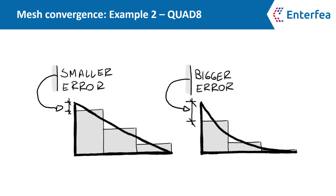As you can see, the quadratic stress distribution means the stress values to the right of each element are lower than in the linear case, so the average is less favorable and it's more difficult for the elements to converge. When the stress distribution is linear, it's actually easier to converge and you require fewer elements. The bigger the local changes — as in this example, where stress changes rapidly near the fixed end — the more elements you require in that region.